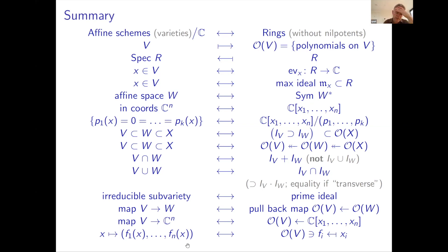A map of V into C^n corresponds to a choice of generators x1 up to xn in the ring O(V). If I have an inclusion of sub-varieties V inside W, I get an inclusion in the opposite direction of the ideals of functions vanishing on W and on V — everything goes backwards. The intersection of two sub-varieties corresponds to the sum of two ideals, and the union of two varieties corresponds to the intersection of ideals. Irreducibility corresponds to primeness of ideals.